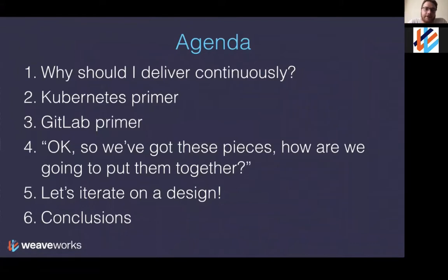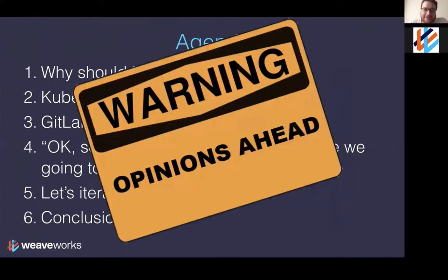The first agenda item is why you should do continuous delivery. Then I'll give you just enough information about Kubernetes to understand the examples, followed by a bit about GitLab. Then I'll iterate on the designs and build up the architecture together. We'll look at some conclusions, and hopefully I'll have some demos — though I've just been told there's a problem with the Katacoda environments. So I may have to skip the demo bits. Apologies in advance if we hit road bumps.